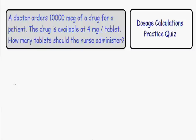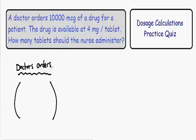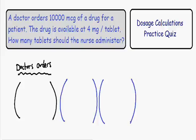The first thing I like to do is start with the doctor's orders. In this first set of black parentheses, I'm going to put the doctor's orders. The basic idea is to take the doctor's orders and convert them into your final calculation using what I call converting tools. These two parentheses are going to be our converting tools, and you can use as many as you need. This is a pretty easy problem, so we only need two.